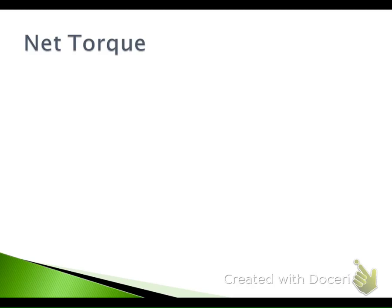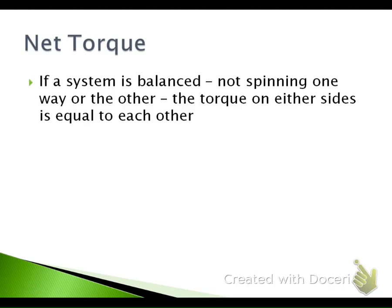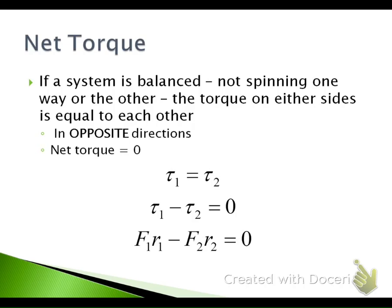Now we'll talk about net torque — meaning the total overall torque. When we look at net torque, we look at a balanced system — something that is totally in balance, not spinning or rotating one way or the other. Both sides are equal to each other, like a seesaw or teeter-totter. Torque of one object has to equal torque of the other, so the net equals zero. We substitute in: radius times force equals radius times force.